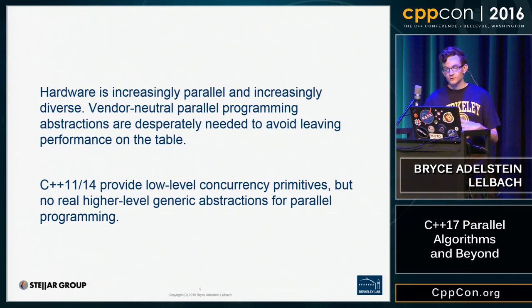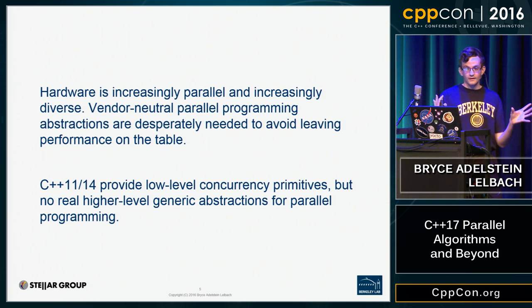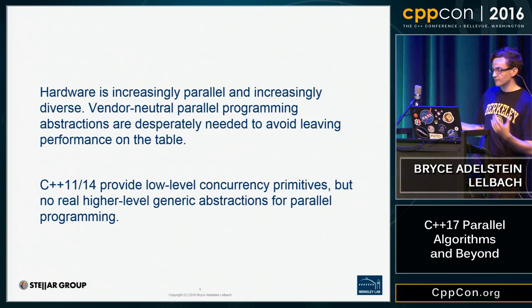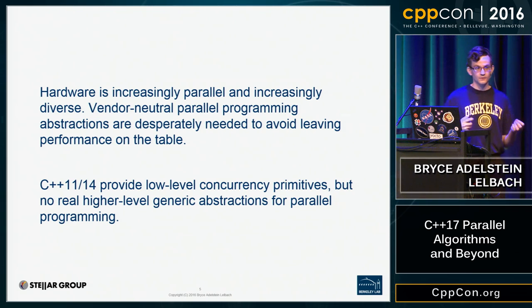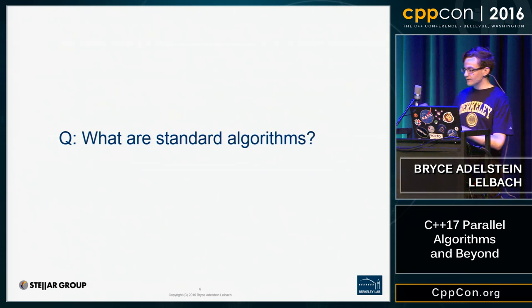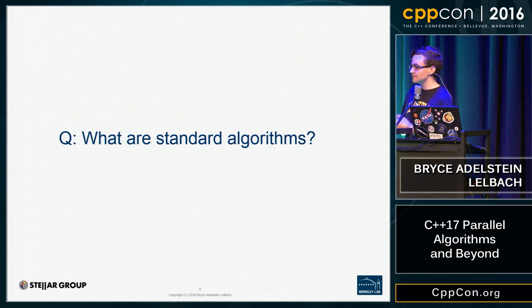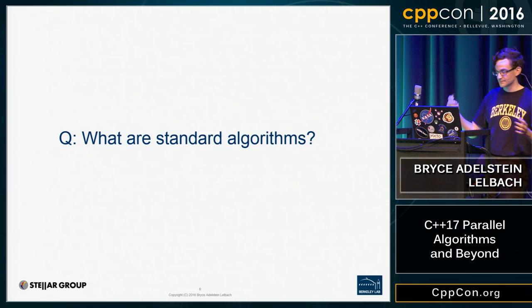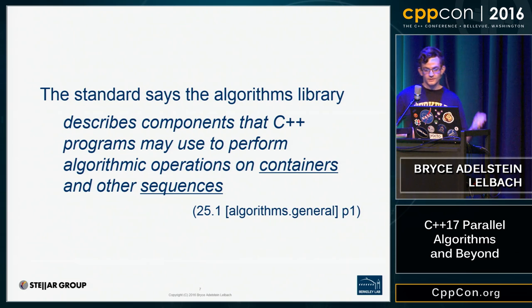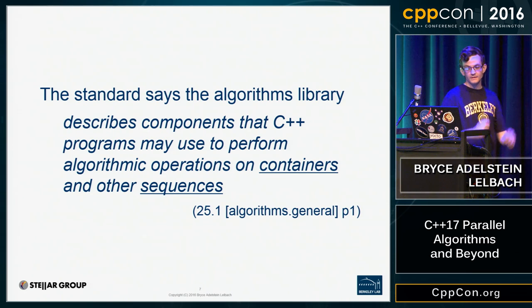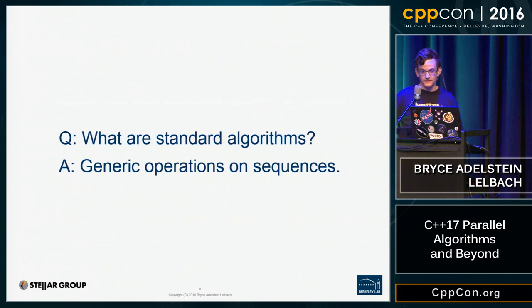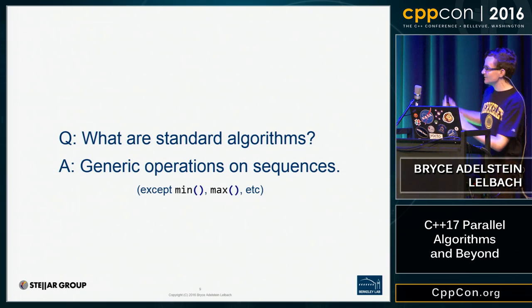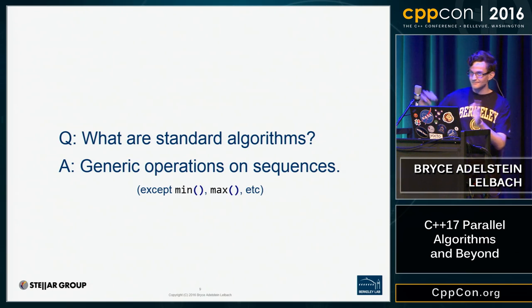What we really need is vendor-neutral parallel programming abstractions that can target multiple different architectures and systems without leaving performance on the table. In C++11 and C++14, we have low-level concurrency primitives, but no higher-level generic abstractions for parallel programming — that's what the parallel algorithms library adds. Before getting into that, I want to talk about what it's based on: the standard algorithms library. The standard says the algorithms library describes components that C++ programs may use to perform algorithmic operations on containers and other sequences.